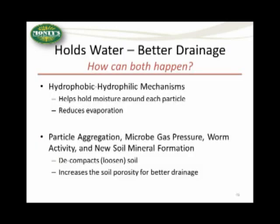So we talked about holding water and better drainage — how do both of those things happen? The hydrophobic and hydrophilic mechanisms help to hold moisture around each particle and reduce evaporation. Particle aggregation, micro gas pressure activity, new soil mineral formation, and worm activity help to decompact or loosen the soil and increase soil porosity for better drainage. These mechanisms are working together — not singularly, but in synergy.